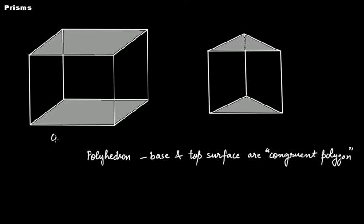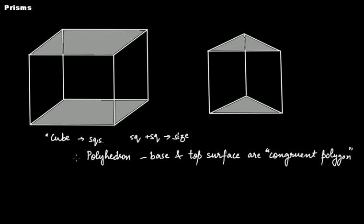In this figure you have a cube. In the case of a cube, we know that all the faces are squares. If you take the base — that is a square — and the top surface — that is also a square — these two squares are of the same size, therefore they are congruent polygons. This is the first condition.